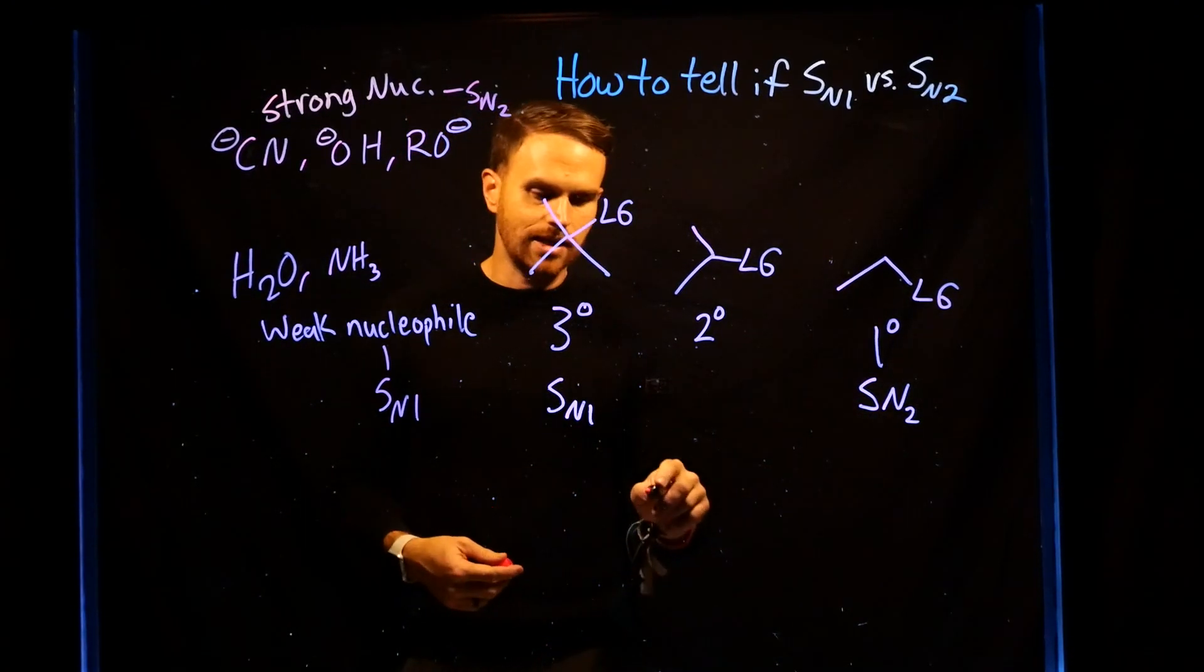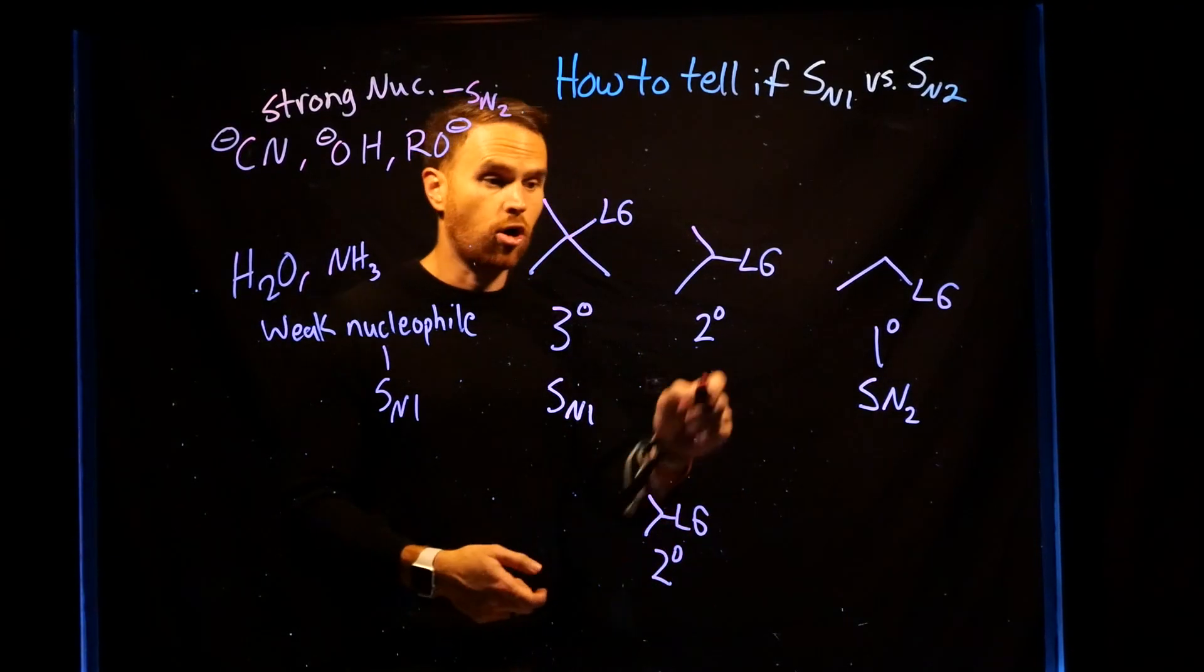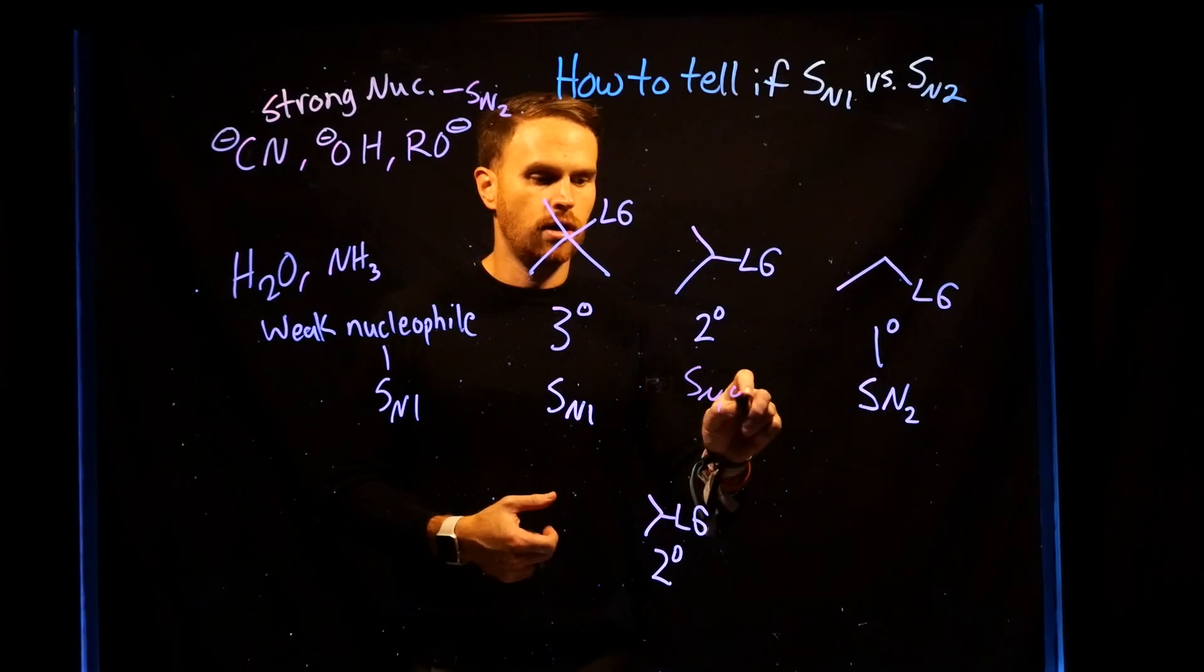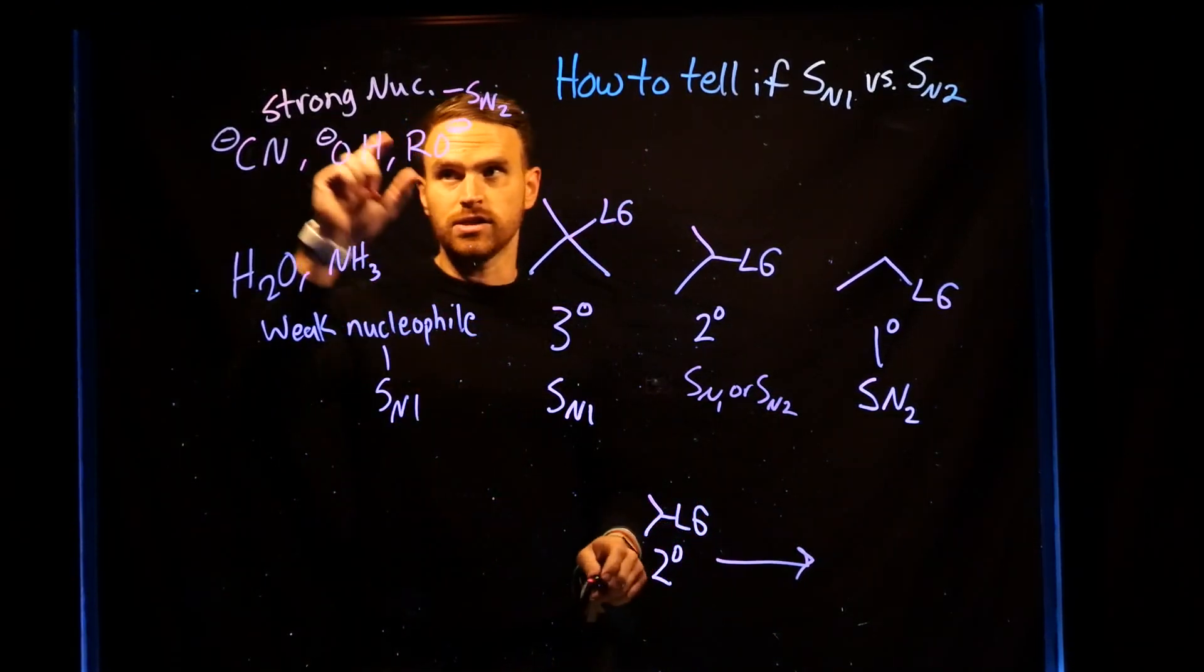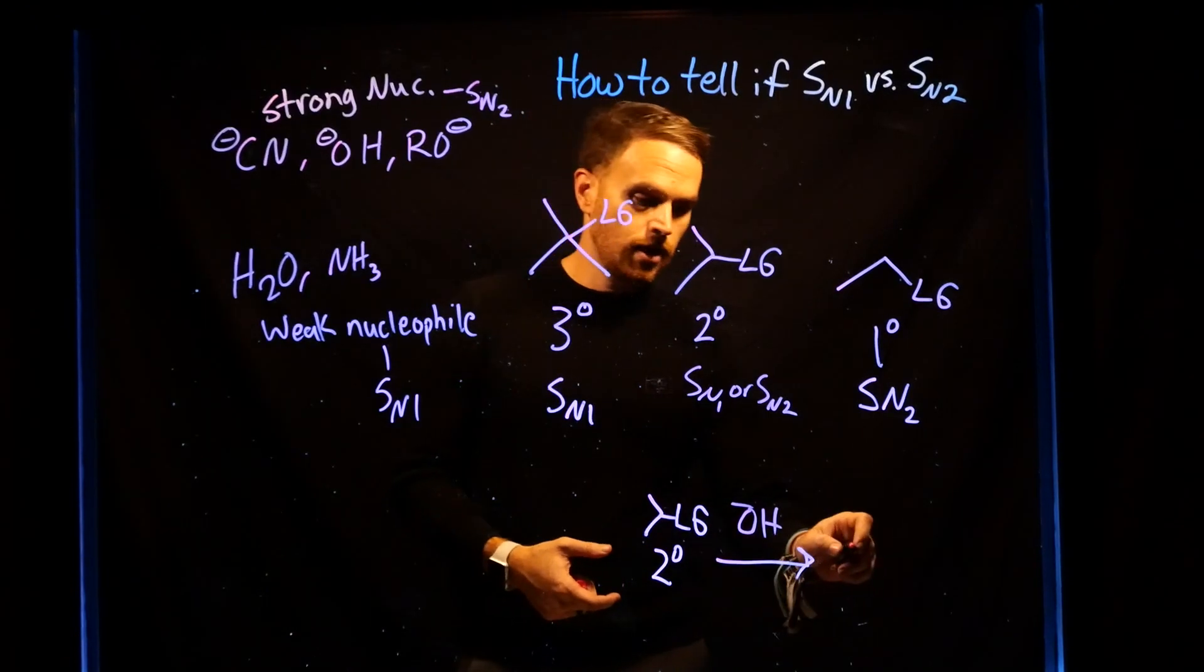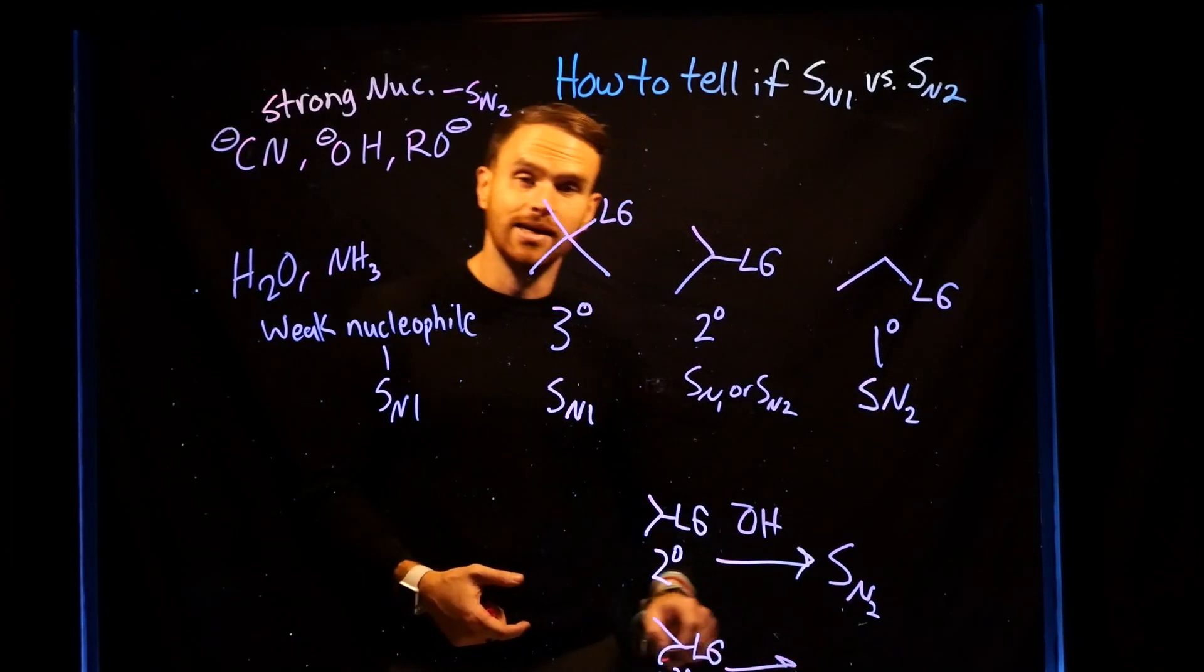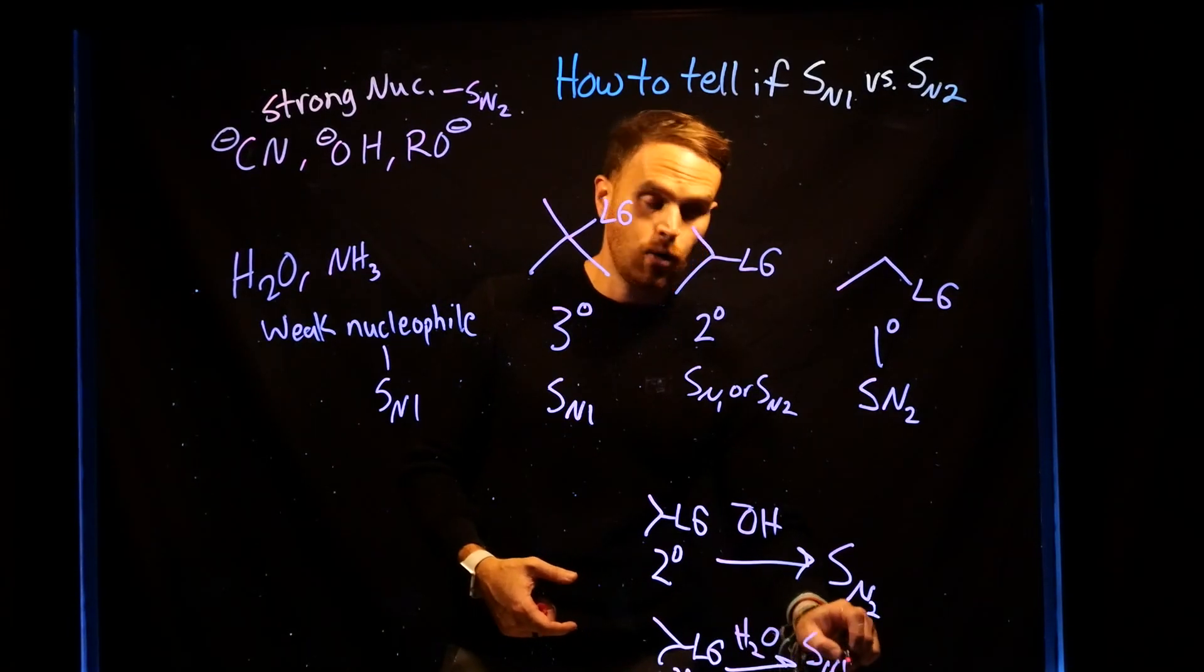Let's consider a couple of examples. Let's say that we have this secondary carbon where there are two different R groups attached to the carbon. This means that it could either follow an SN1 reaction or an SN2 reaction. Then we need to identify whether or not the nucleophile involved is strong or weak. So if something was OH minus, that's likely to follow an SN2 reaction, whereas if the leaving group attached to the secondary carbon is attacked by a weak nucleophile like water, that is going to proceed via an SN1 reaction.